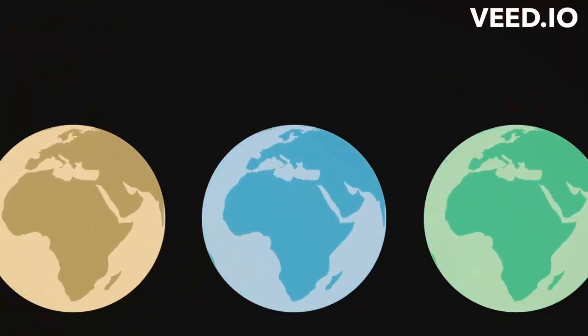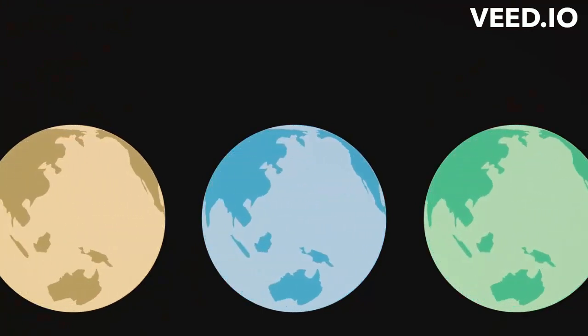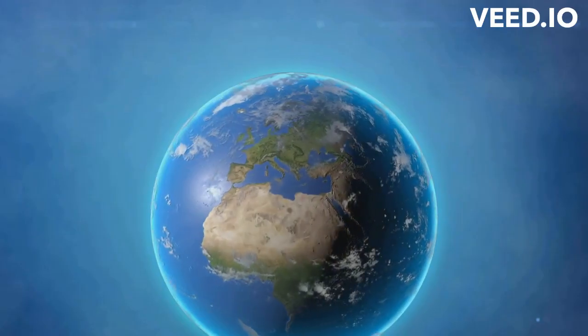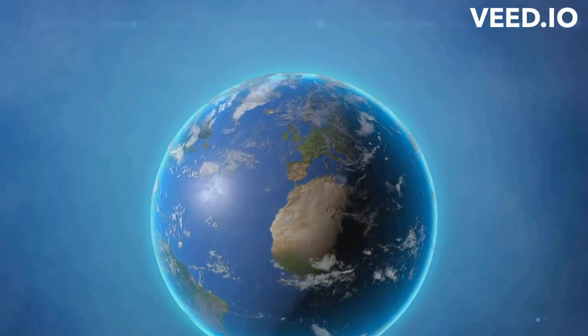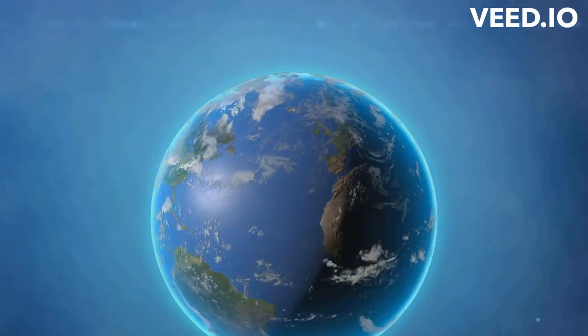It creates the 24-hour day-night cycle, influences our weather patterns, and even affects the very shape of our planet. Now that we understand why and how Earth spins, let's imagine what could happen if it suddenly stopped.